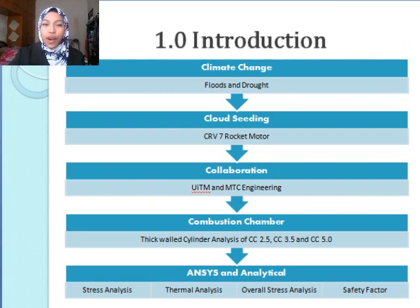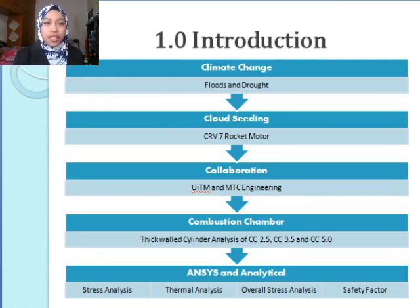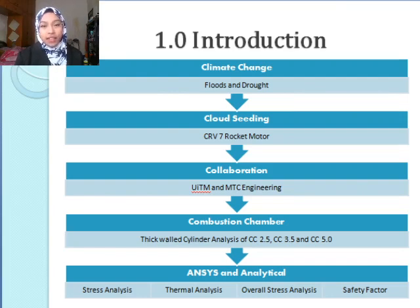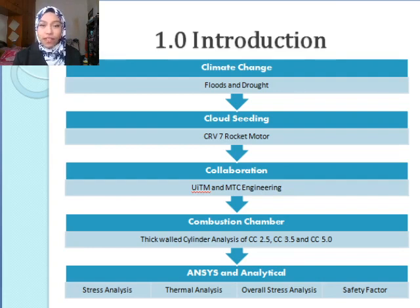Introduction. Everywhere experiences climate change. Malaysia especially experienced it in terms of floods and drought. To counter this problem, the solution is cloud seeding. Cloud seeding can be done by operating a small-sized rocket such as a CRV7 rocket motor. This is found out due to the collaboration of UITM and MTC Engineering to construct a cloud seeding rocket to help Malaysia improve for future endeavours. The focus of this study is the combustion chamber, or also known as solid rocket motor casing, analyzed through ANSYS and analytical methods.